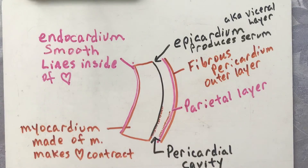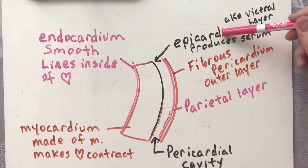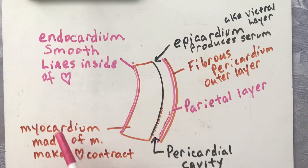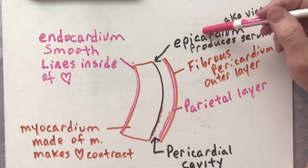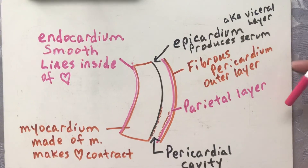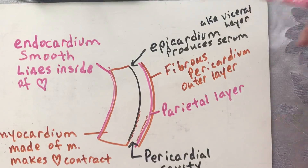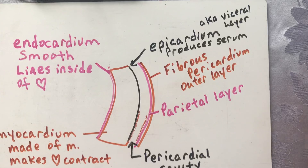So once again, the three layers of the heart wall are the epicardium, the myocardium, and the endocardium. The epicardium is on the outside and is also known as the visceral layer. The endocardium is on the inside, and the myocardium is the thick part in the middle. Those are the walls of the heart.